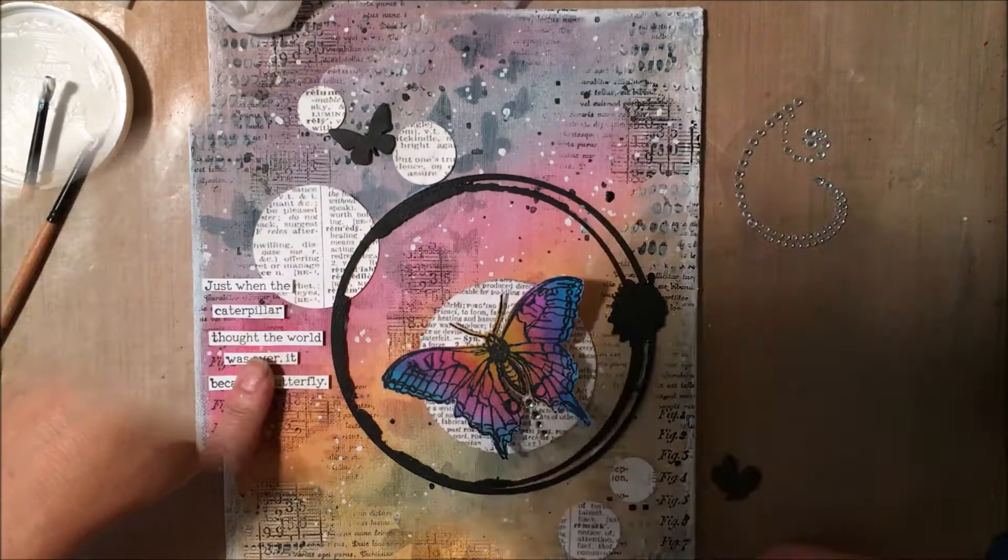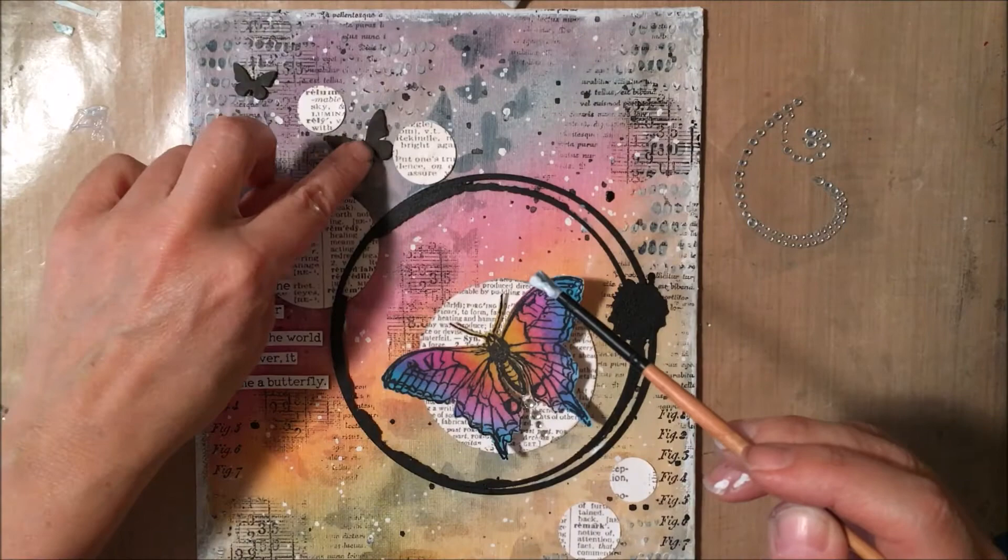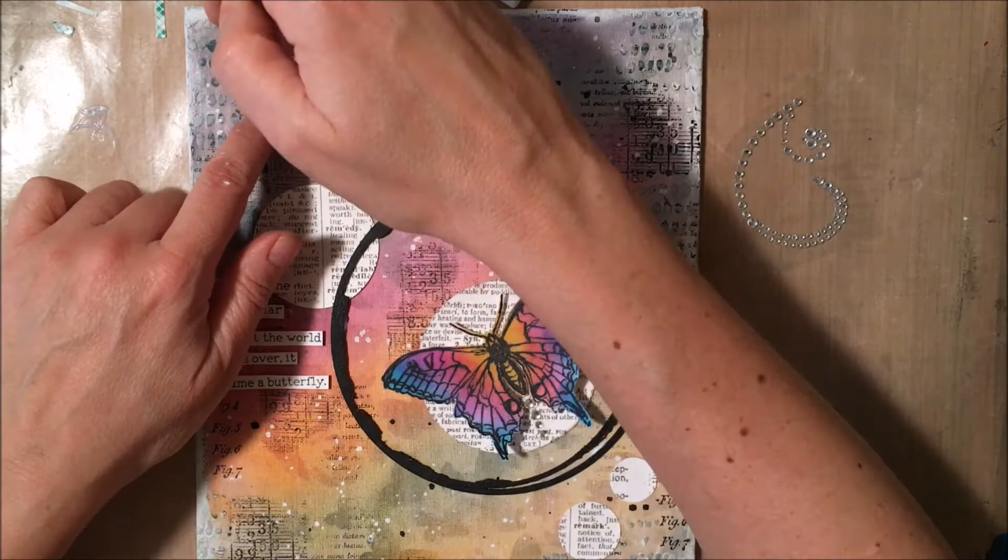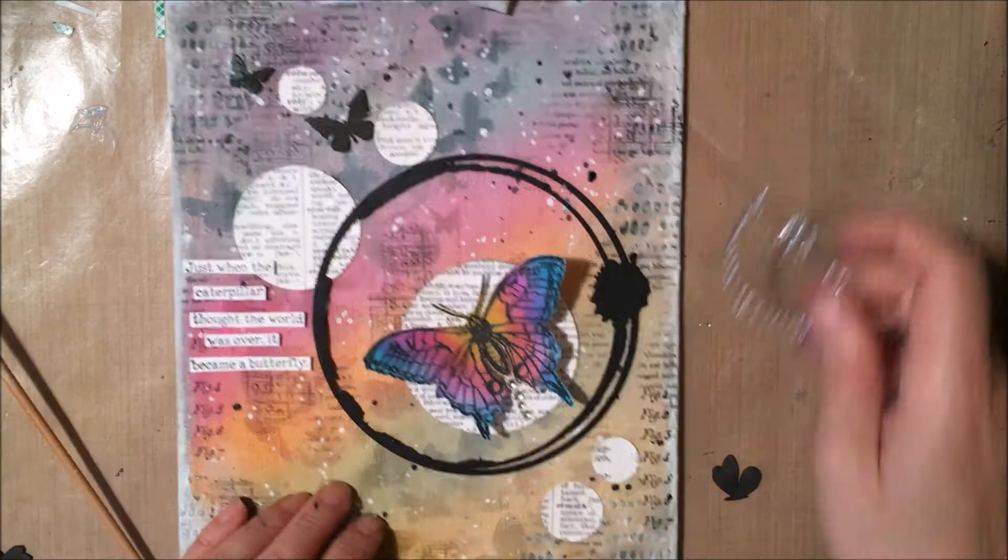And then now I am adding those Wendy Vecchi matte mini butterflies. Kind of it's a nice look where you have the butterflies in the background and then now you've got these ones in the foreground. So it kind of creates this really great look like a full covered canvas of butterflies. My favorite.